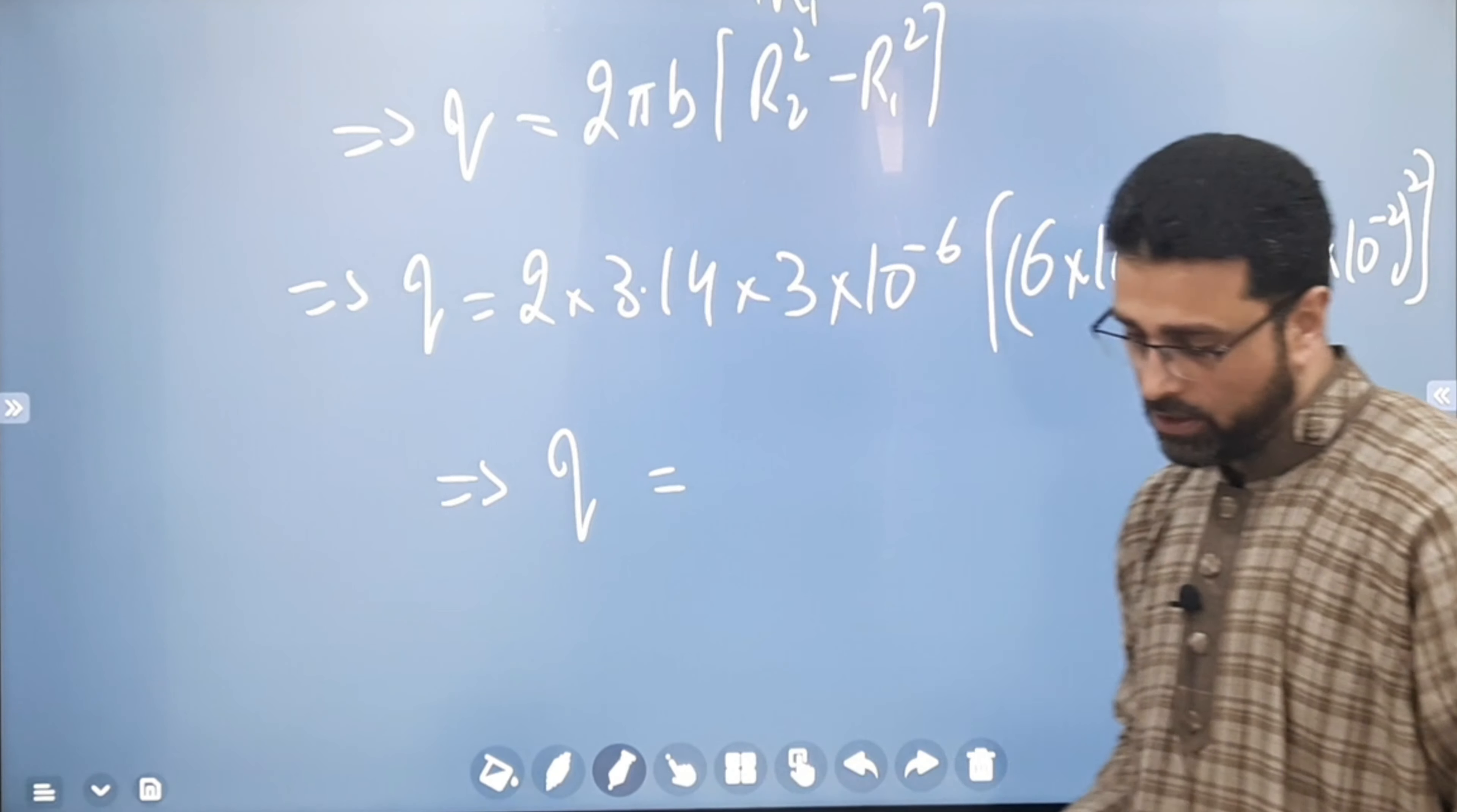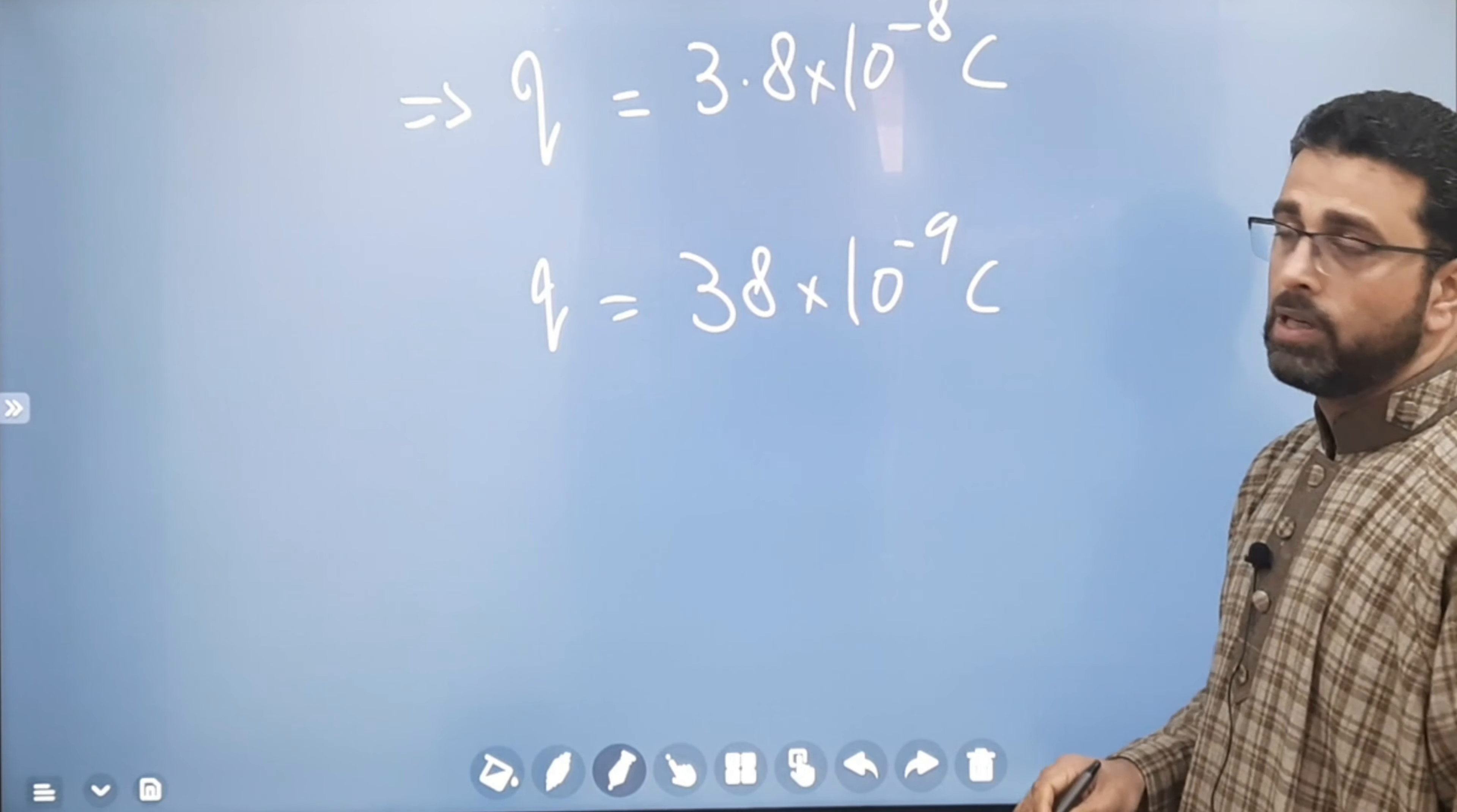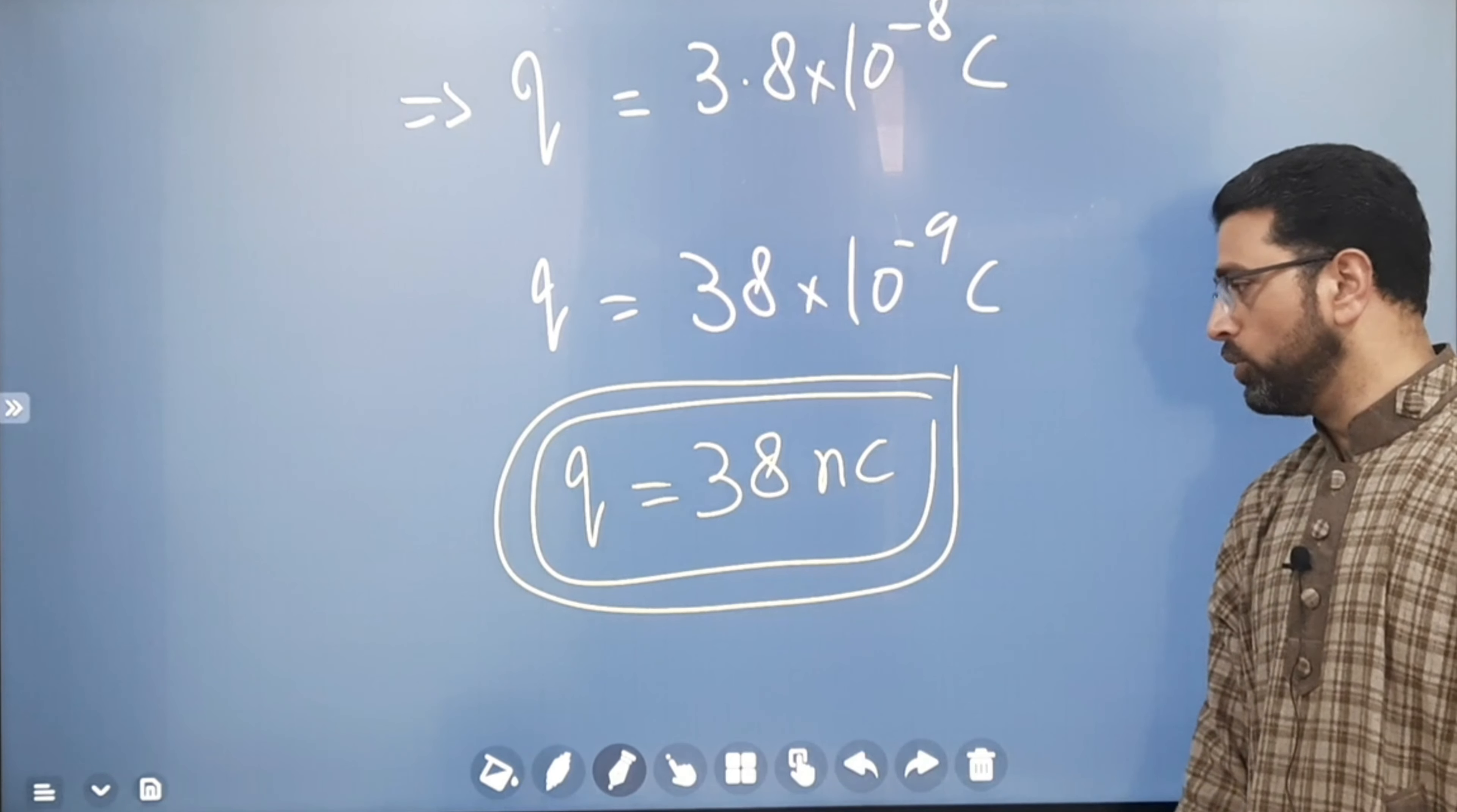Q is equal to 3.8 into 10 to the power minus 8 coulomb. Which can be written as Q is equal to 38 into 10 to the power minus 9 coulomb. Now, minus 9, 10 to the power minus 9 is nano. So, this is 38 nanocoulomb. So, charge of the spherical shell is 38 nanocoulomb.